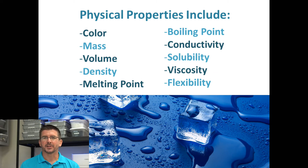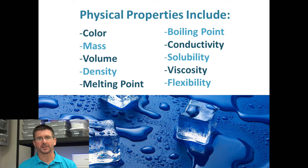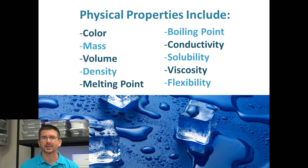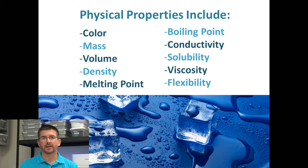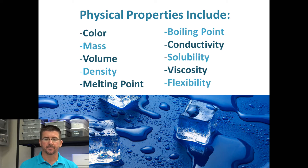I have a list here — of course this isn't every single physical property a substance can have, but it's a pretty inclusive list of the major ones. It includes things like the color of an object, the mass of an object, the volume, the density, and the melting point.